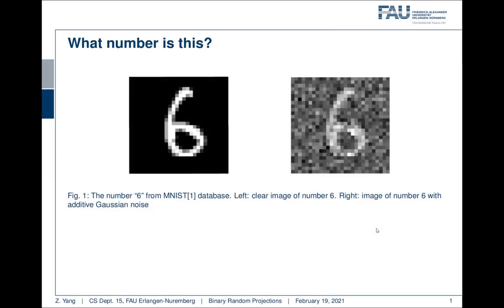The first question is what number is this? As a human being we can easily distinguish that these two images are the same number, number six. The left hand side is a clear image and on the right hand side is the same image with additive Gaussian noise.